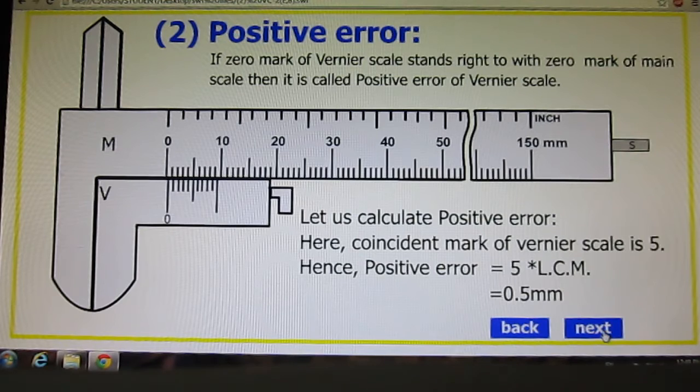Now we will move on to positive error. If zero mark of Vernier scale stands right to the zero mark of main scale then it is called positive error of Vernier Caliper. Here you can see both are not aligned. Zero mark of Vernier scale is on the right side.